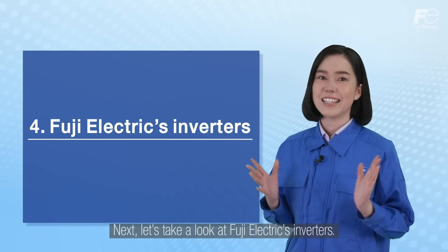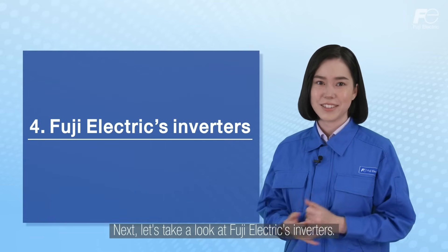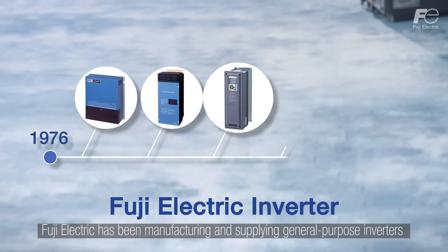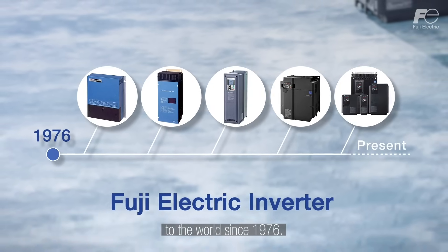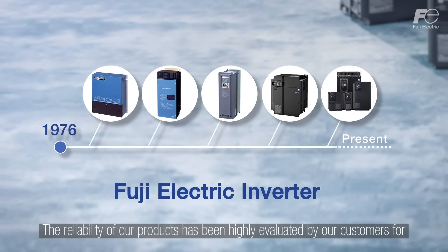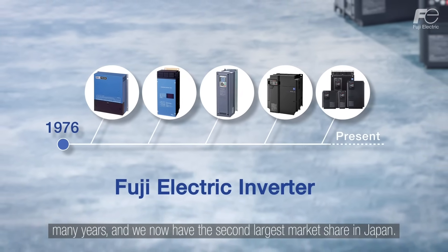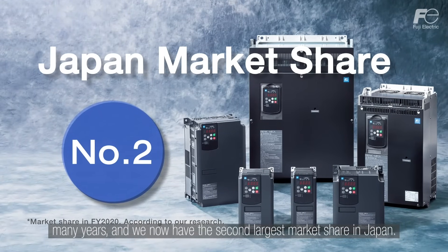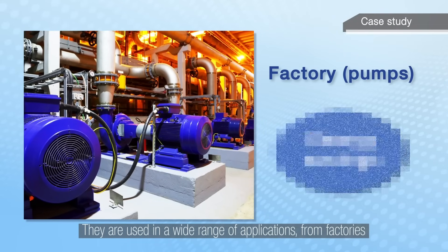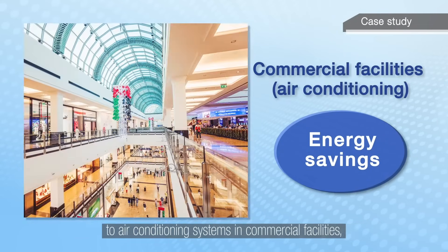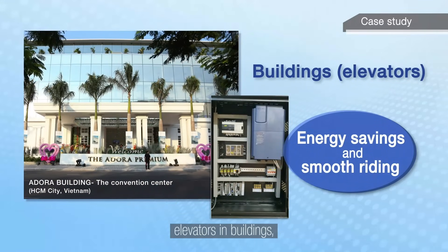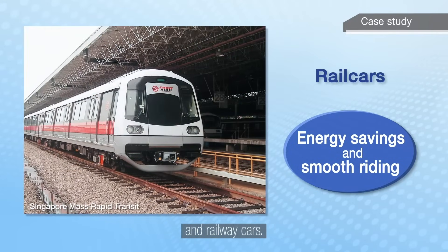Next, let's take a look at Fuji Electric's inverters. Fuji Electric has been manufacturing and supplying general purpose inverters to the world since 1976. The reliability of our products has been highly evaluated by our customers for many years, and we now have the second largest market share in Japan. They are used in a wide range of applications from factories, to air conditioning systems in commercial facilities, elevators in buildings, and railway cars.